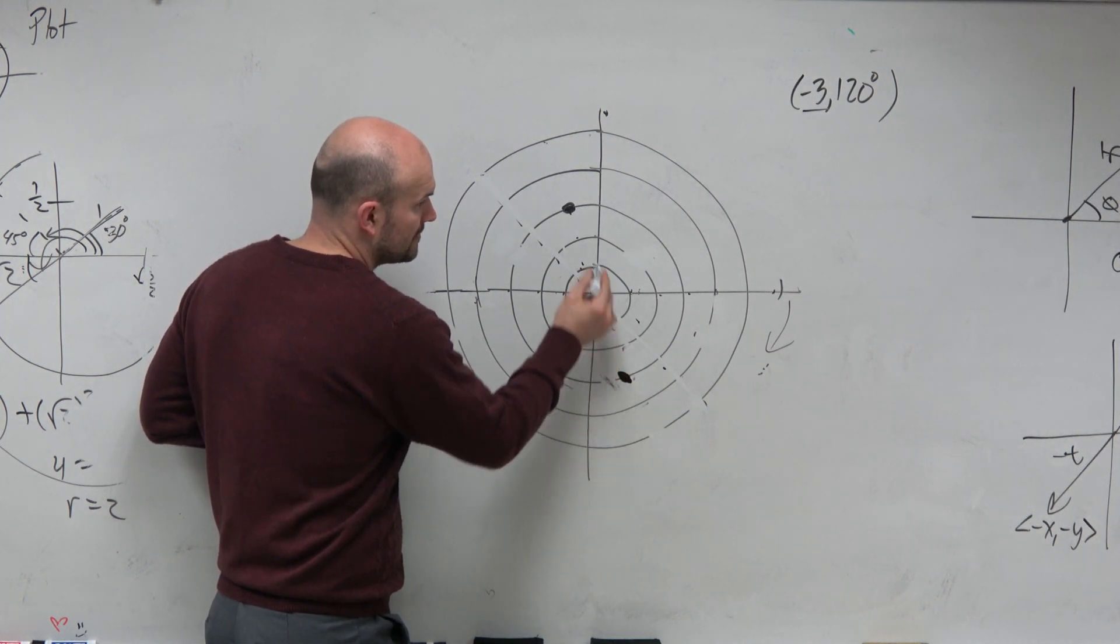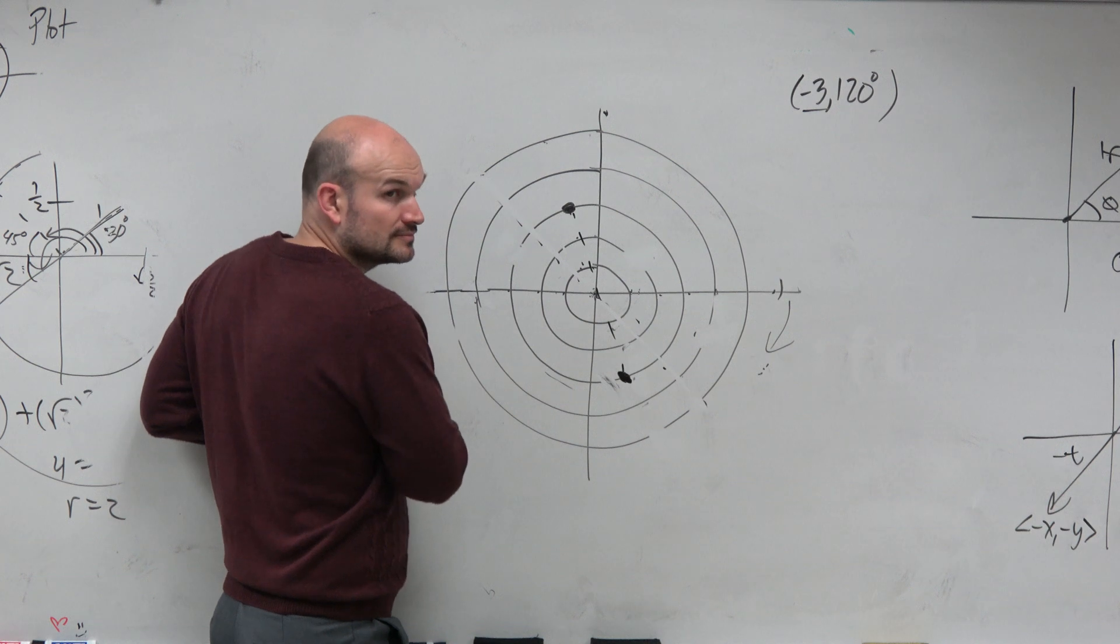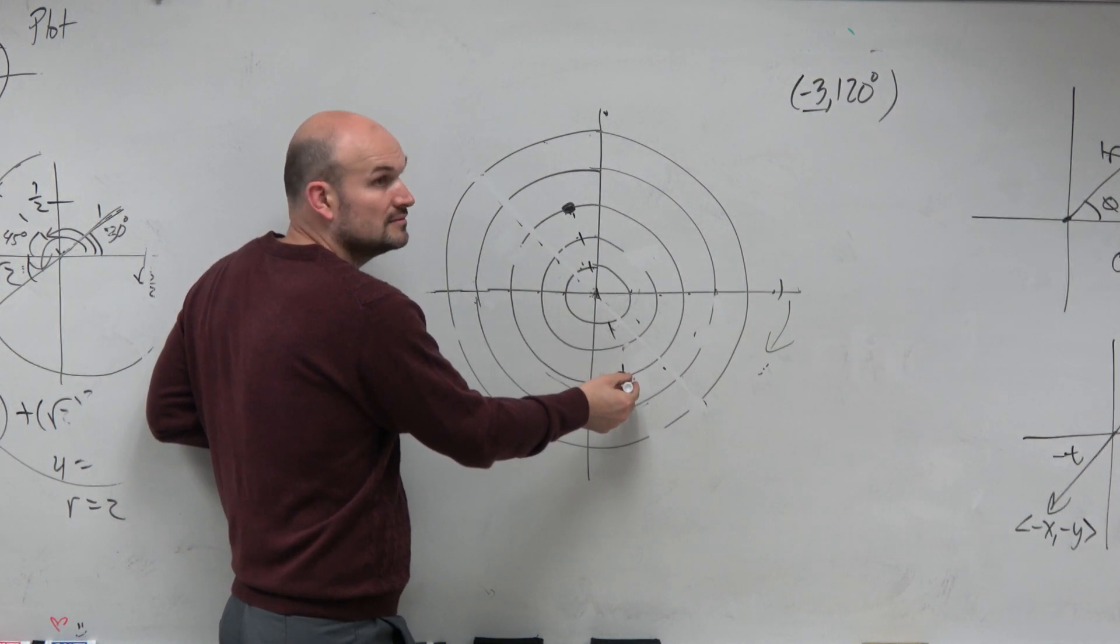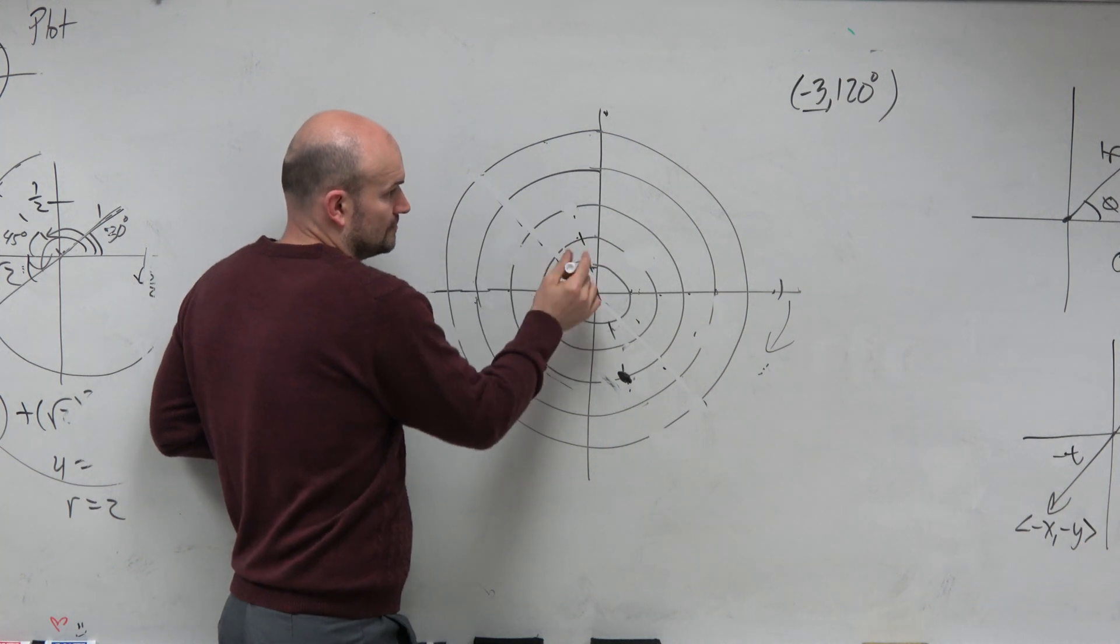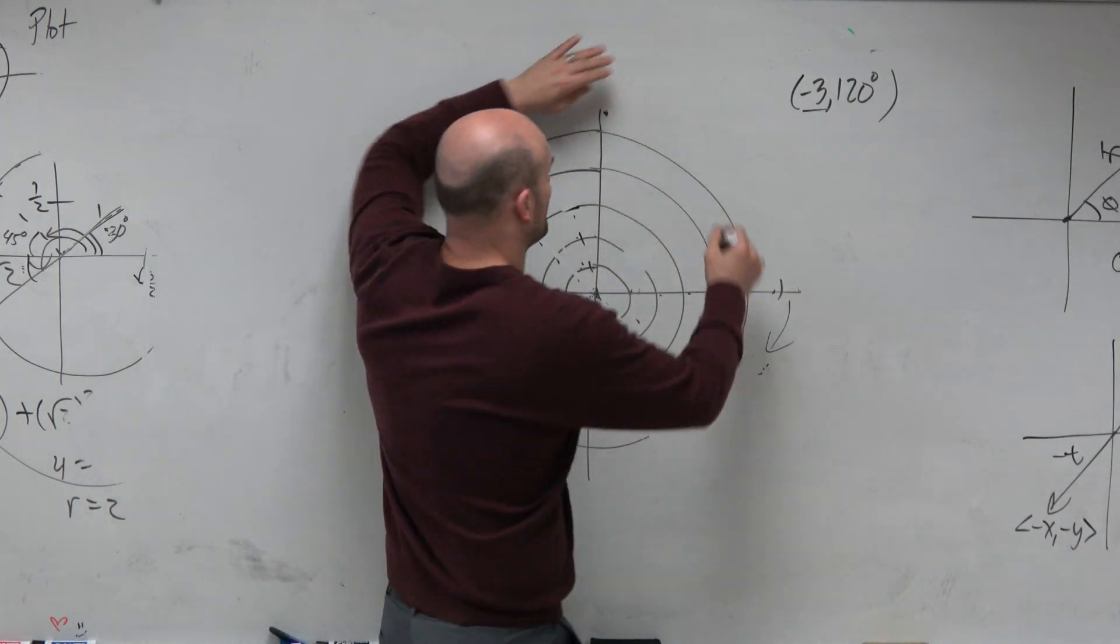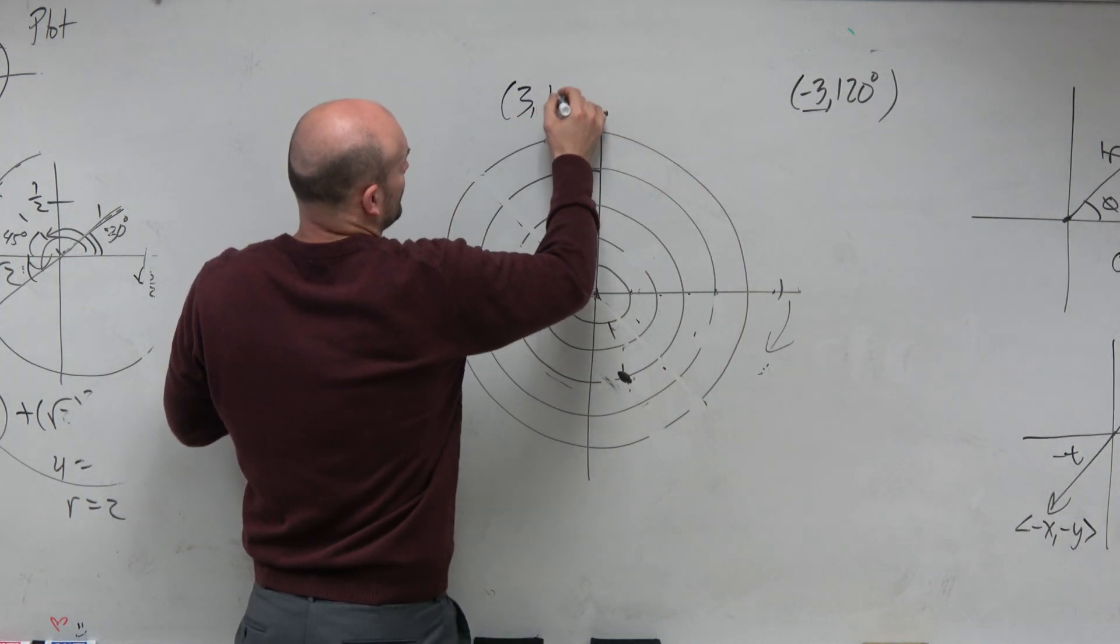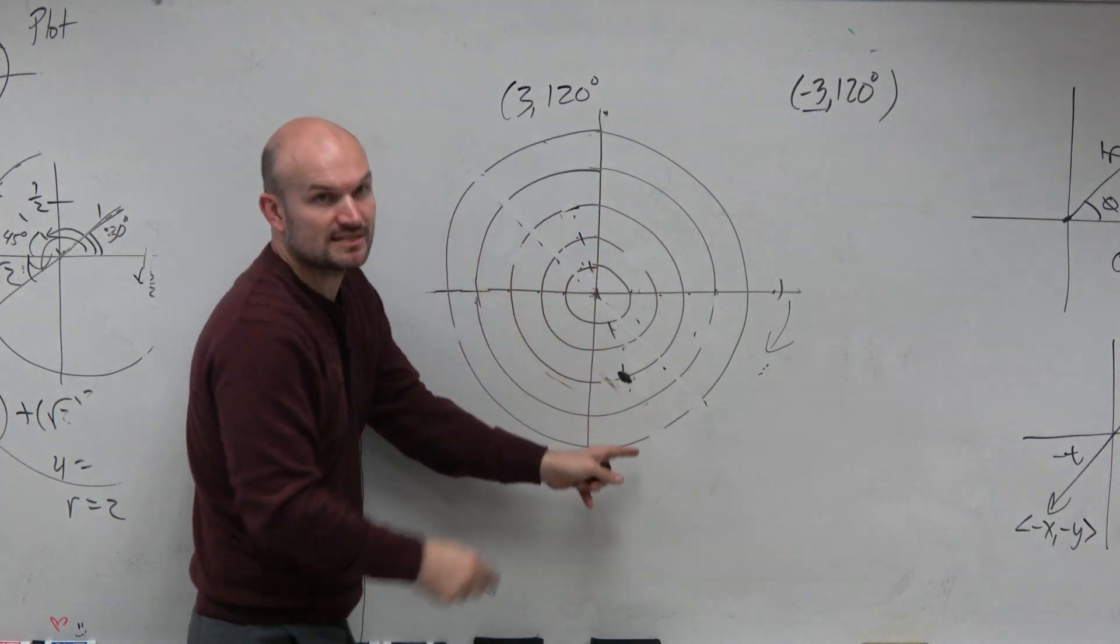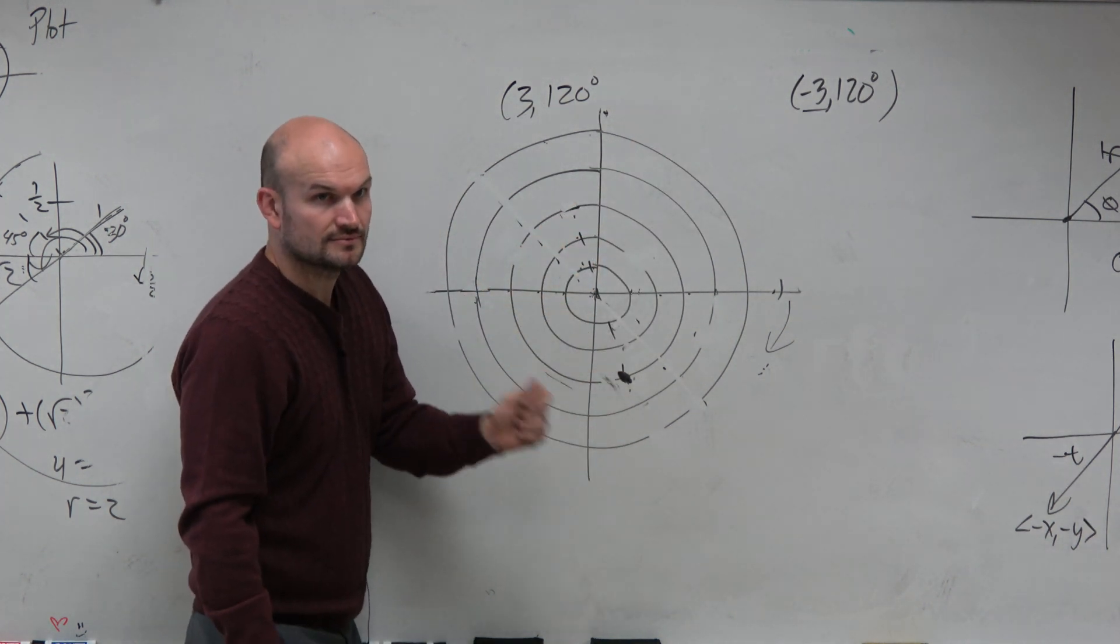So this is actually not that point. That point is actually down here. Right? So the real point is down there. That's the real point down there. If you find it, what I do is I just graph 3, 120, which is right there. And then the negative tells you to reflect about the origin. Right?